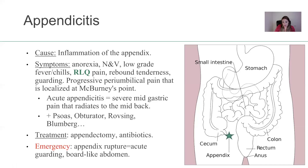For example, acute appendicitis: severe mid-gastric pain that radiates through the mid-back. Positive psoas, positive obturator, positive Rovsing sign, positive Bloomberg. When in doubt in the test, if it's positive, it's most likely appendicitis, except for a few that we'll go over. So what's the treatment? Appendectomy, antibiotics, depending on the severity. An emergency is if the appendix ruptures — its contents can leak into the peritoneum, causing really bad things. It usually presents with acute guarding and board-like abdomen.